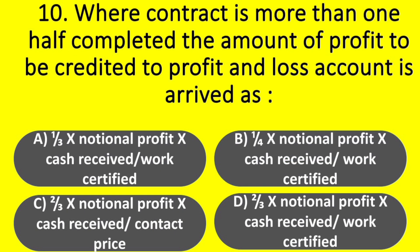Question. Where a contract is more than one-half completed, the amount of profit to be credited to profit and loss account is arrived at as: Option A – 1/3 × notional profit × cash received / work certified. Option B – 1/4 × notional profit × cash received / work certified. Option C – 2/3 × notional profit × cash received / work certified. Answer: Option D – 2/3 × notional profit × cash received / work certified.